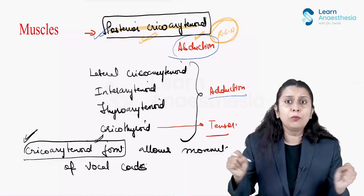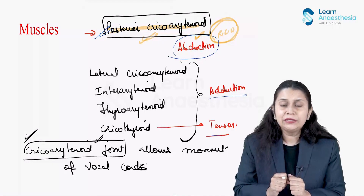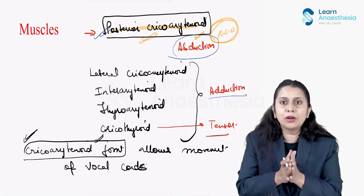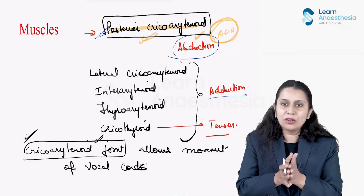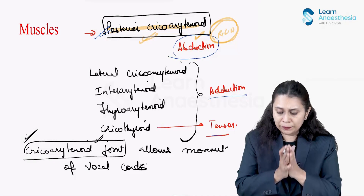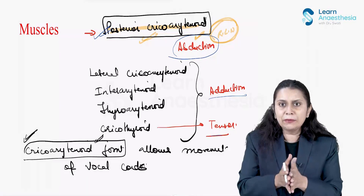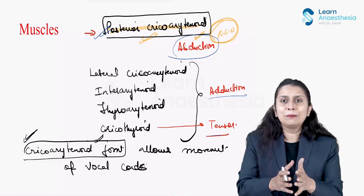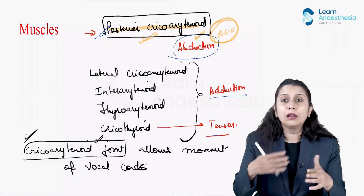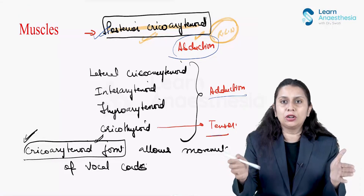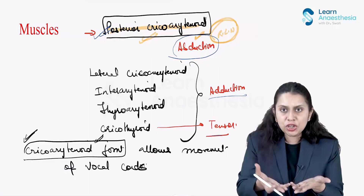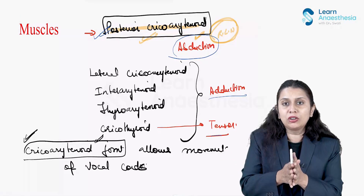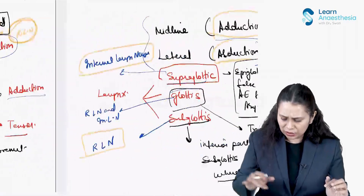If the recurrent laryngeal nerve of both sides, right and left, gets damaged, then abduction — moving the vocal cord away from the midline — will get affected, causing a problem in breathing. We phonate through a closed vocal cord and we breathe through an open vocal cord. So for breathing the vocal cord has to be open, and for phonation it has to be closed.